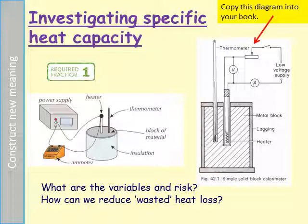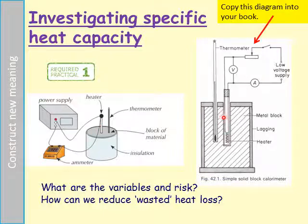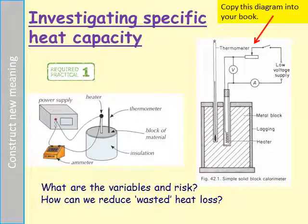Here are two pictures showing the practical for solids — one is a 3D representation and the other is a more scientific diagram. You can see the heater and the thermometer in both. This represents those blocks from the previous slide shown as a cross section. One big difference from the blocks shown earlier is insulation to reduce wasted heat loss. To prevent heat escaping from the block and being transferred to the surrounding air, you need to insulate the block. That will make your results and your calculation of specific heat capacity more accurate.